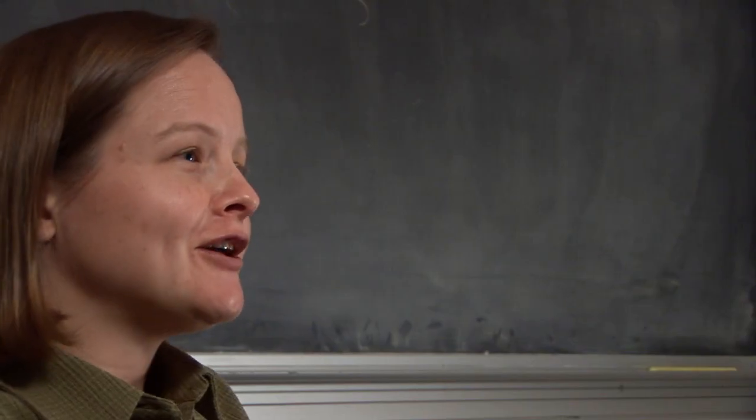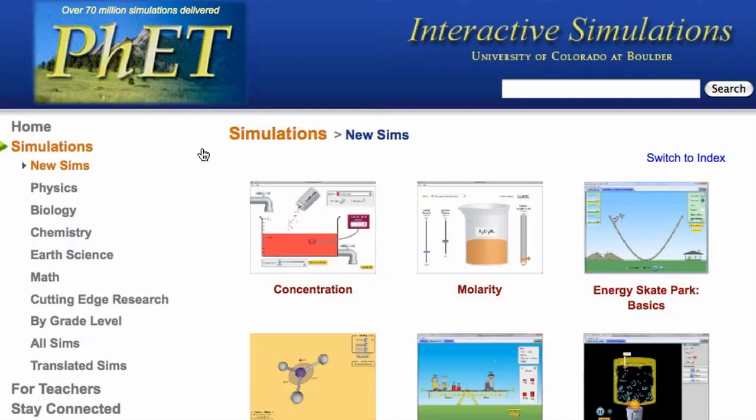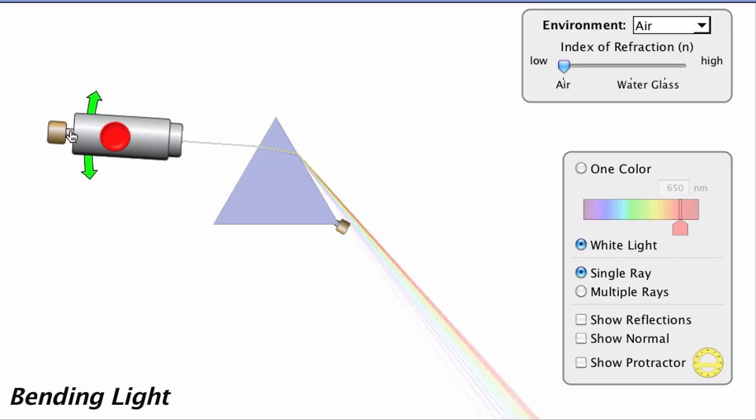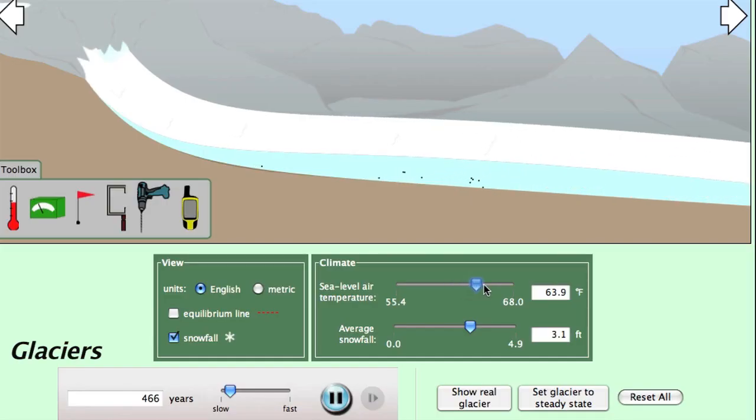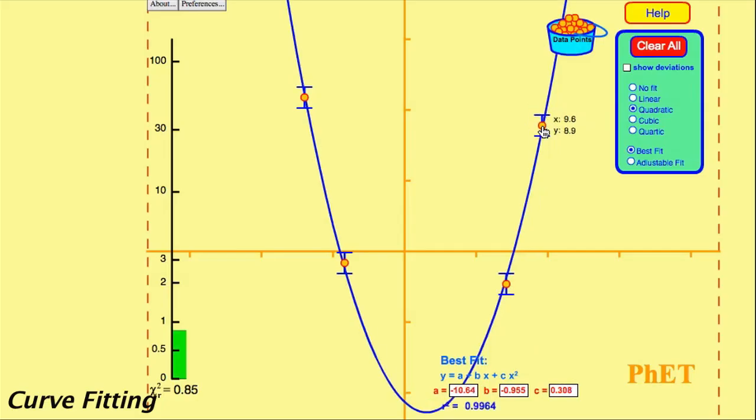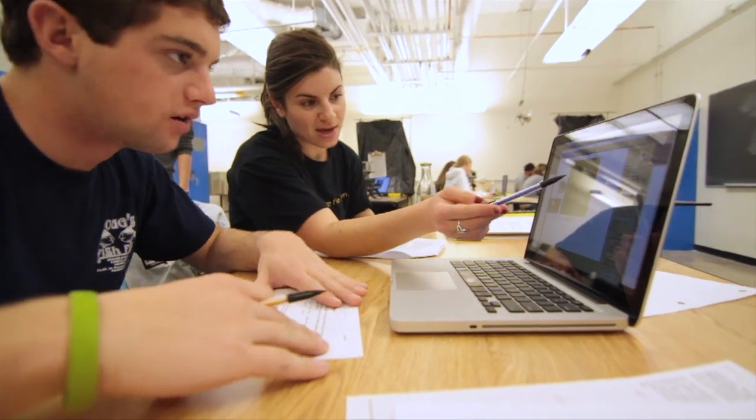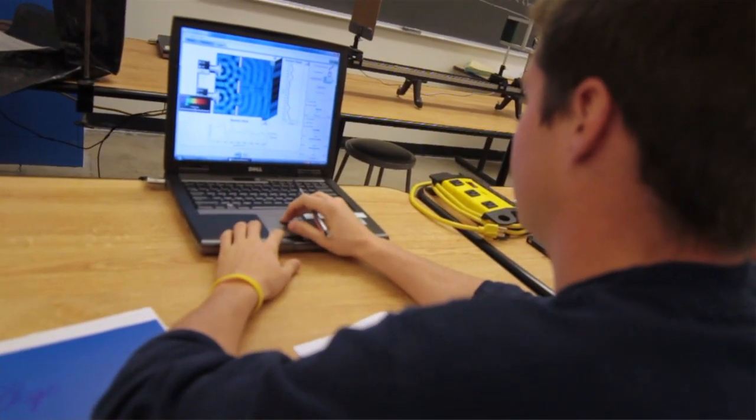PhET is a collection of over a hundred interactive simulations for teaching and learning science. They're all free on the web. You can run them online or download them to your computer. We have simulations in physics and chemistry and a growing number in earth science, biology, and math. One of the main goals of PhET is to provide students with an open exploratory environment where they can engage with the science content like a scientist.